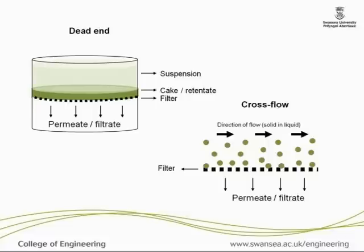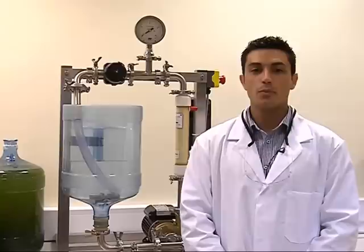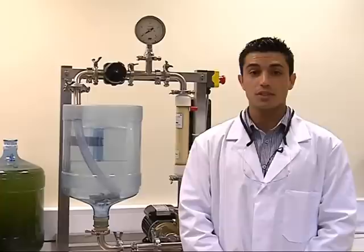In dead-end filtration, the feed flow is perpendicular to the membrane. However, in cross-flow, the feed is parallel to the membrane and the permeate flow flows through the membrane pores in a cross-flow mode. Cross-flow filtration minimizes the buildup of cake. Essentially, filtration is like a sieving process in which particles are separated based on their size.